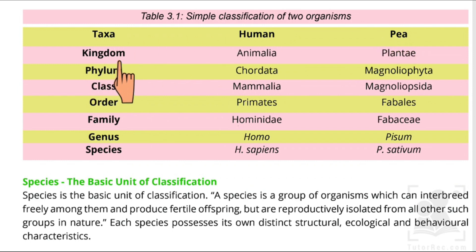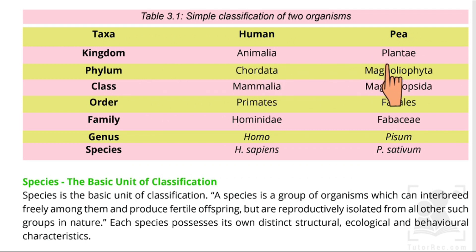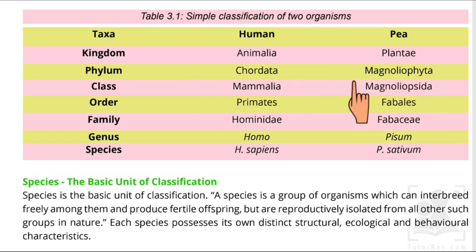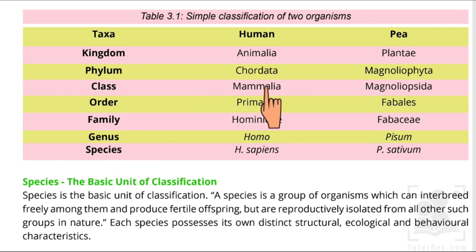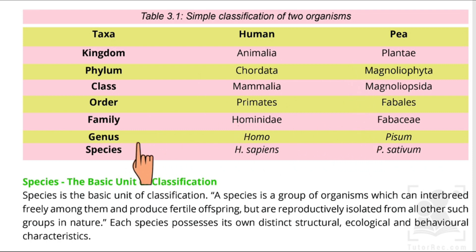For example, classifying humans and pea plants: humans belong to Kingdom Animalia, Phylum Chordata, Class Mammalia, Order Primates, Family Hominidae, Genus Homo, and Species Homo sapiens. The last species — the human species — is called Homo sapiens.